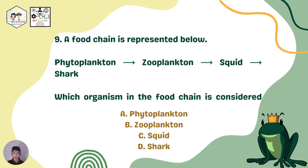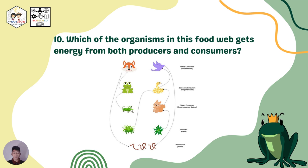For question number nine, look at the food chain below. Which organism in the food chain is considered the top predator? A. Phytoplankton. B. Zooplankton. C. The squid. Or D. The shark. And for question ten, look at the food web picture — you can zoom in — and identify which of the organisms in this food web gets energy from both producers and consumers.